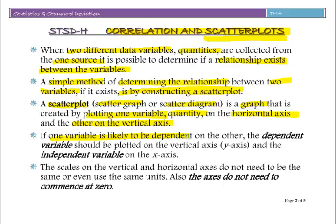If one variable is likely to be dependent on the other, the dependent variable should be plotted on the vertical axis or y-axis, and the independent variable goes on the x-axis. The scales on the vertical and horizontal axes do not need to be the same or even use the same units. Also, the axes do not need to commence at zero.